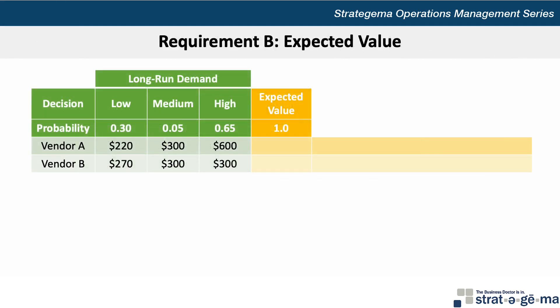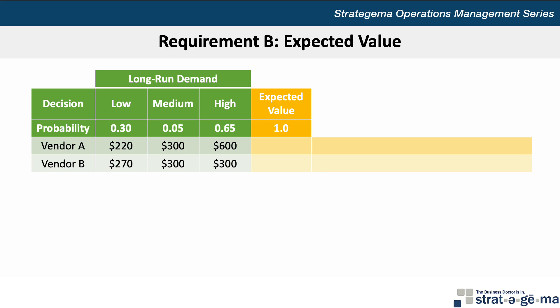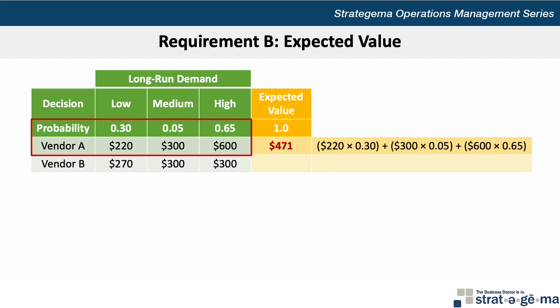Now on to requirement B, which uses the expected value criterion. Here I've modified the table to include the probabilities associated with each long-run demand outcome: 0.30 if demand is low, 0.05 if demand is medium, 0.65 if demand is high. The sum of the probabilities must of course equal 1.0 or 100%. To determine the expected value for each vendor, we simply multiply each demand payoff by the respective probability. So for vendor A, we would take 220 times 0.3, plus 300 times 0.05, plus 600 times 0.65, to yield an expected value of $471 million.